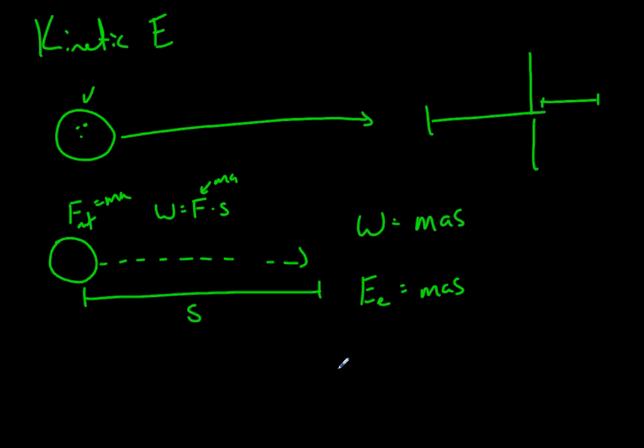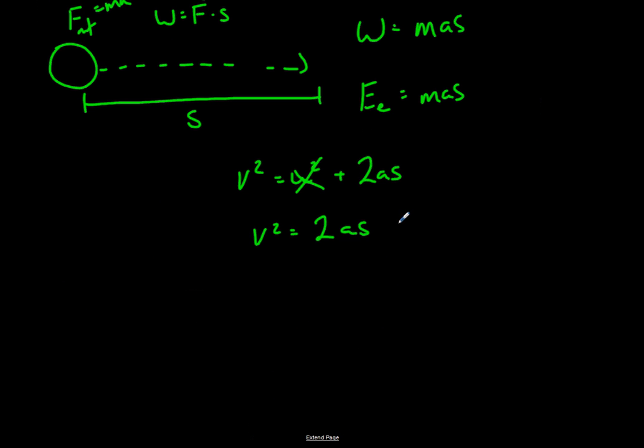From our kinematics, we know that V squared equals U squared plus 2AS. In the case of this bowling ball, its initial velocity was zero, so we can get rid of that. So we can then say V squared, the velocity of this should be equal to 2 times its acceleration times its distance over which it traveled.